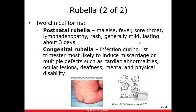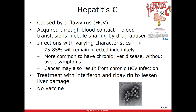Another virus in the flaviviridae group is hepatitis C, spread not by insects but through bodily secretions — blood transfusions or needle sharing. Once you have hepatitis C, you generally have it forever: about 75-85% remain infected for the rest of their life. It can cause chronic liver disease. We don't have a vaccine, but just in the last five years we do have some treatments that interfere with the virus's replication, lessening liver damage and allowing people to live with the virus without major repercussions — though you do have to continually take the antiviral.